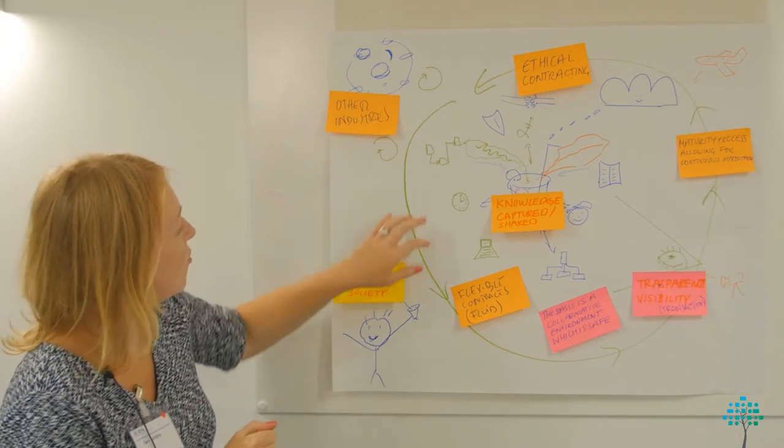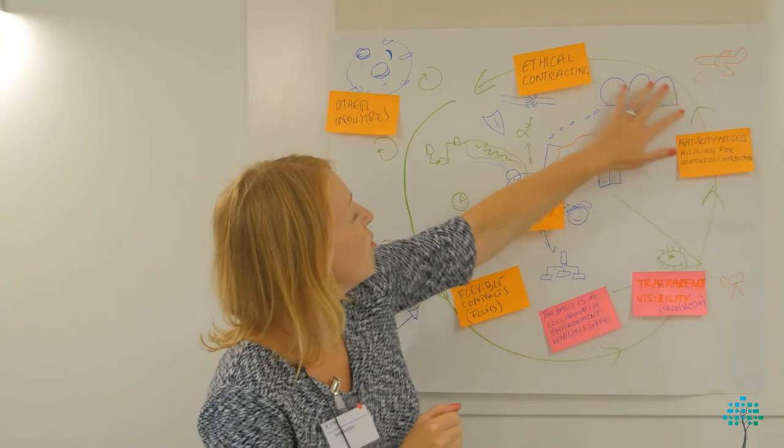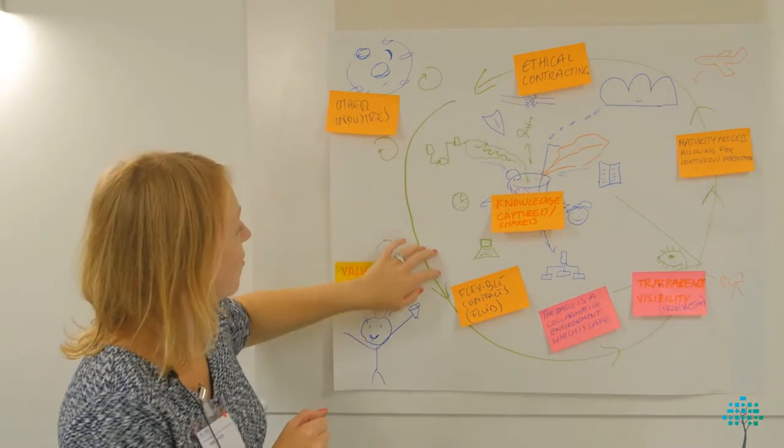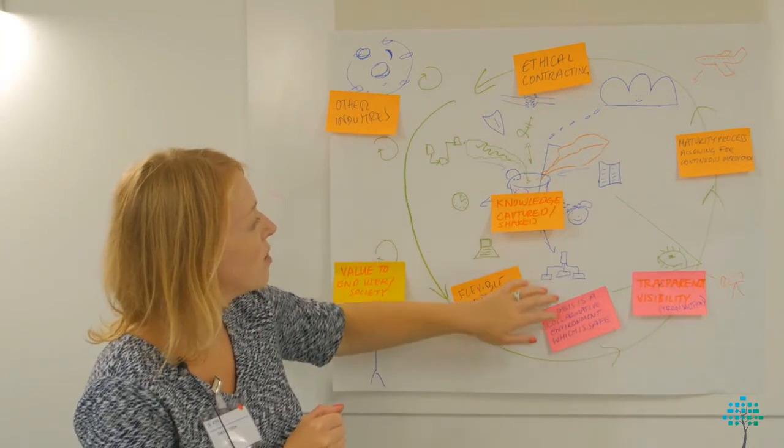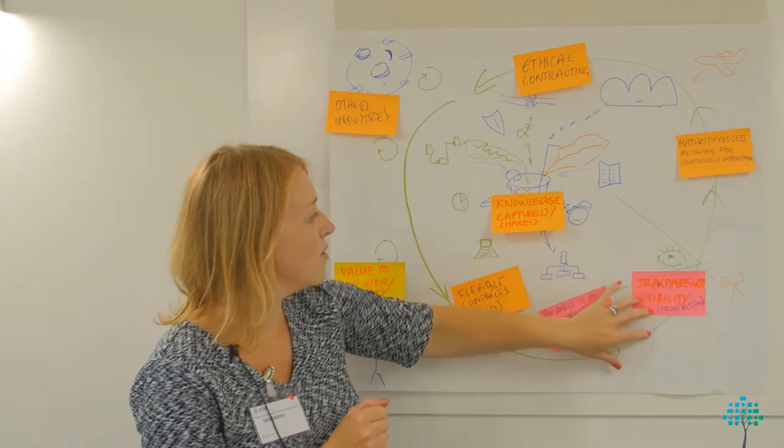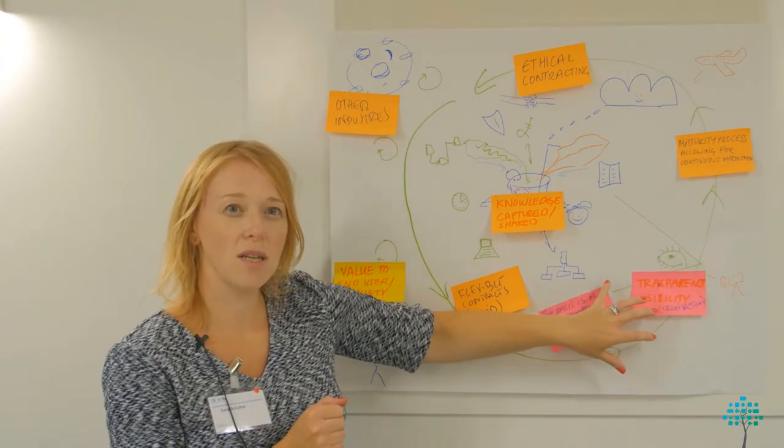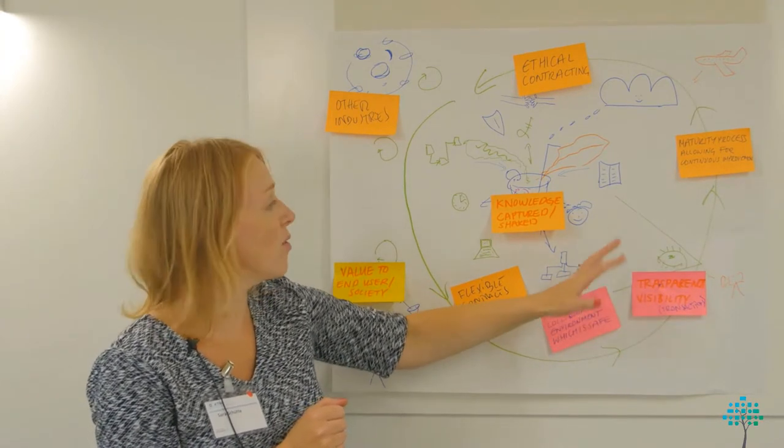What we've got here is a circle representing the maturity process, allowing for continuous improvement. The project is transparent and visible in terms of its transacting, outputs, and inputs, which are pertinent to this cocktail here.